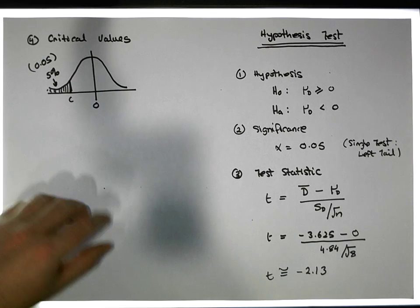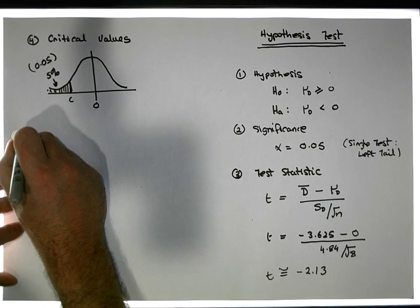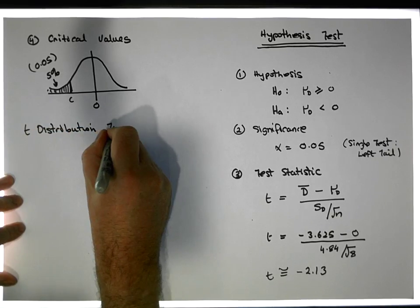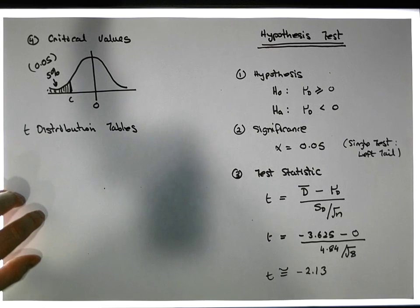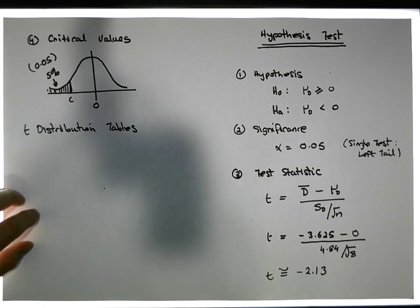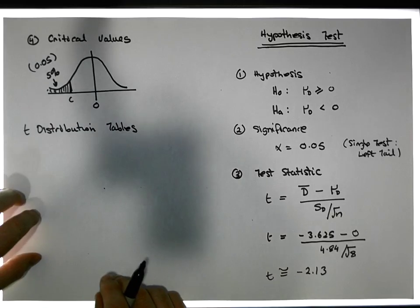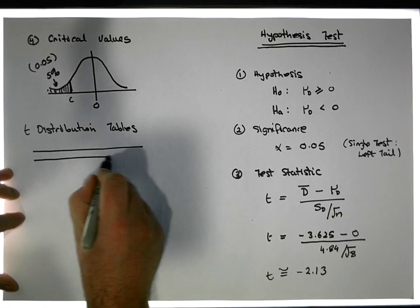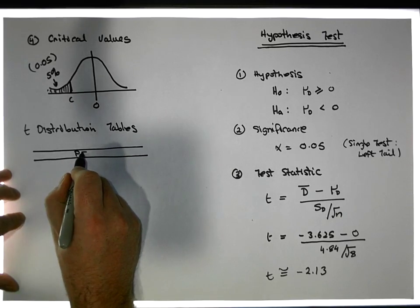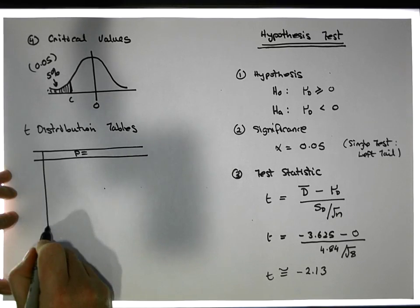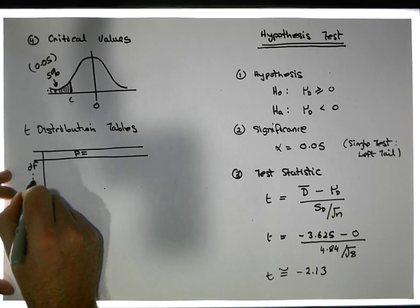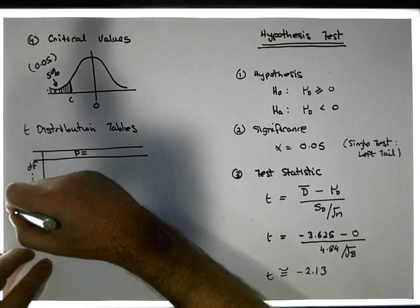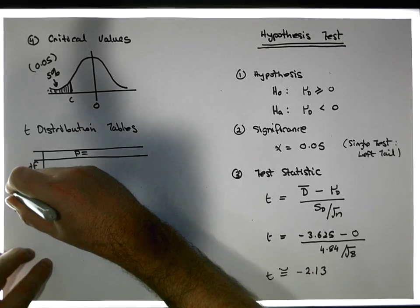To find the critical values we're going to go to our t-tables. Our t-distribution tables are parameterized by the probability — the amount of area that we're putting in our tail — and also by the degrees of freedom. Our degrees of freedom for a t-test is the sample size minus one, so degrees of freedom equals n minus one.